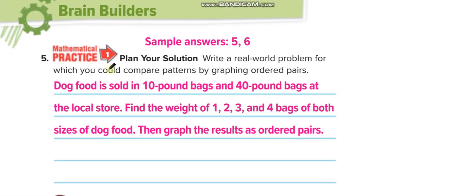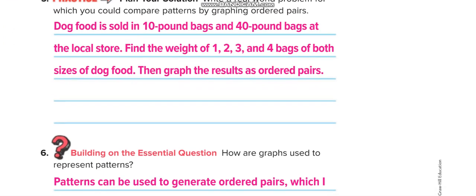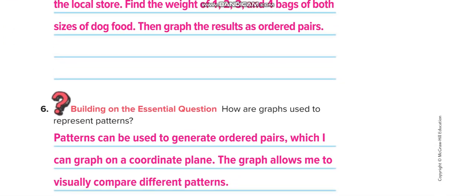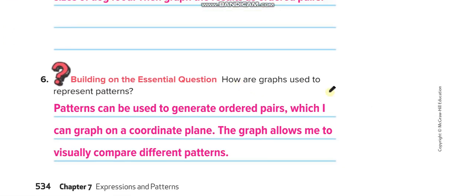Here I write a real-world problem — solve it and try to understand it. How are graphs used to represent patterns? Patterns can be used to generate ordered pairs which you can draw on a coordinate plane. The graph allows you to visually compare different patterns.